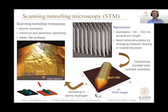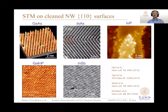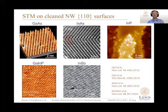If this works well, then we can get nice images like this of a nanowire grown in this direction. Here are examples that we succeed in cleaning different types of III-V materials more or less well. You can see some small patches of surface oxide left, for example on indium phosphide.